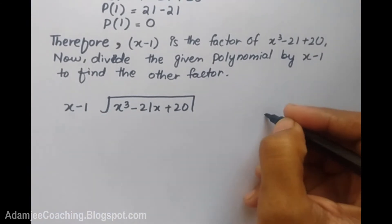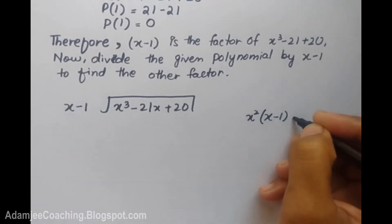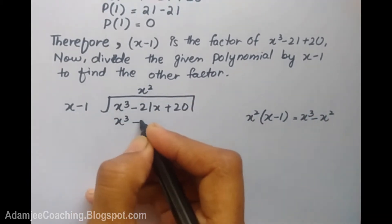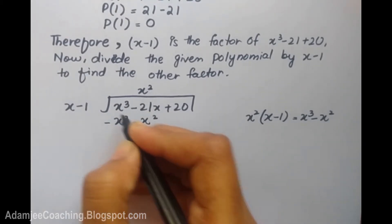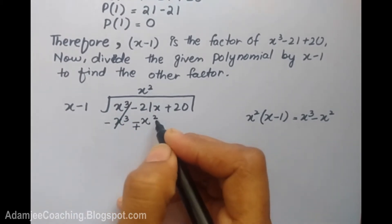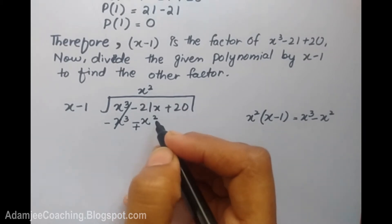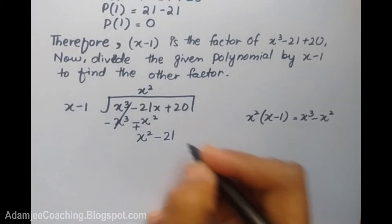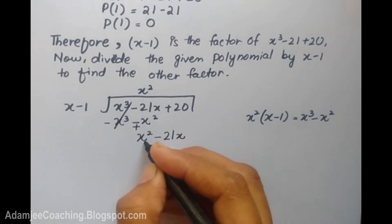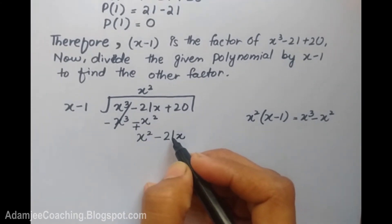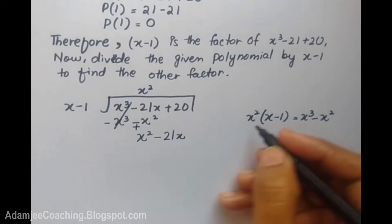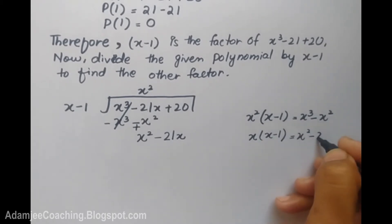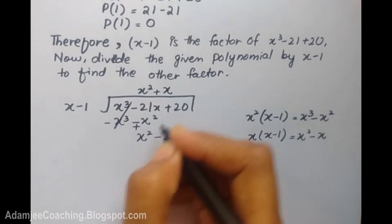We divide by x minus 1. To make x cube cancel, I use x squared. x squared times x is x cube, and x squared times minus 1 is minus x squared. We multiply x squared from x squared; by x, x is x squared minus x, and 1 is x. We change the sign by canceling: plus becomes minus.